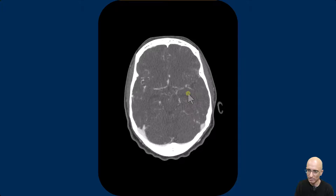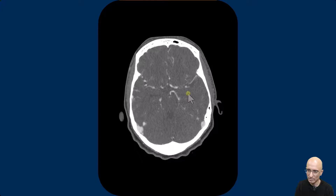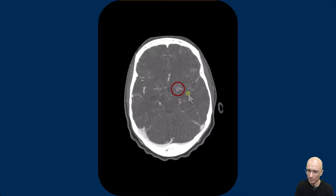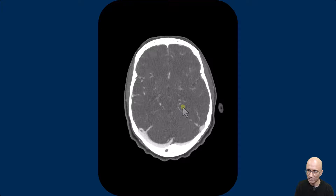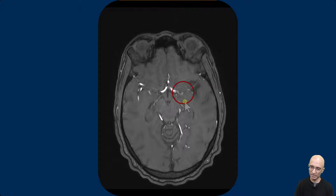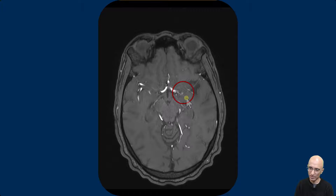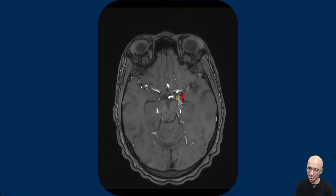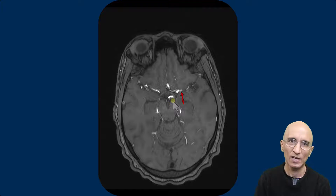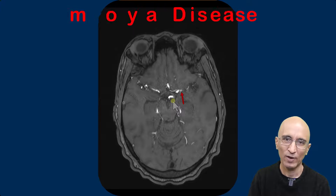As I scroll further, you can see a number of collateral vessels in the basal ganglia region. Patient also underwent MR angiogram examination as part of the workup, and you can see a number of collateral vessels in the basal ganglia region and marked stenosis of the M1 segment of the middle cerebral artery.